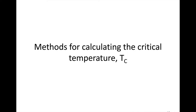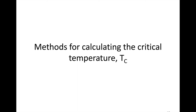We've talked about physical properties, phases, oxygen content, and the Meissner effect. Now let's look at probably one of the most critical things — the critical temperature. If we have a superconductor, it's a perfect conductor below a certain temperature, and we want to know what that temperature is. There are multiple ways to get the critical temperature. One of the easiest is to measure resistivity as a function of temperature, since it's supposed to be zero resistance.